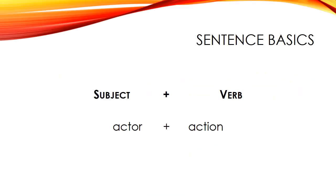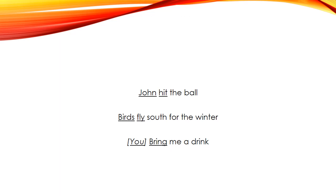Let's step back and talk about some very basic grammar. Every sentence has a subject and a verb. The subject is normally the actor — the person or thing doing the action — and the verb is the action being performed. For example: 'John hit the ball' — John is the subject, hit is the verb. 'Birds fly south for the winter' — birds is the subject, fly is the verb. 'Bring me a drink' — bring is the verb, and the implied subject is 'you.'